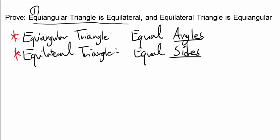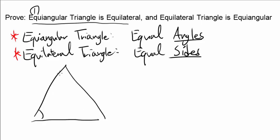Let's start with the first part: an equi-angular triangle is equilateral. So let's draw an equi-angular triangle where this angle, this angle, and this angle are all the same. The easy way of doing it is by dropping a perpendicular. Whenever you have equal angles or equal sides, drawing a perpendicular usually helps you make congruent triangles or similar triangles, which is generally going to help your case.